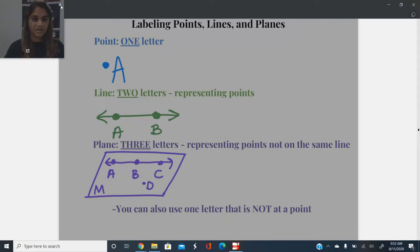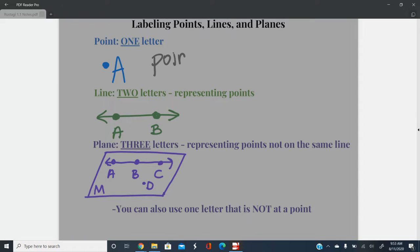So our first one is going to be how to label a point. A point is always going to be just one letter. Whatever letter is next to that physical dot that describes the point is what we're going to use. So to label that, we would just write out the word point and then the letter that follows, which is just A. So that would be point A.